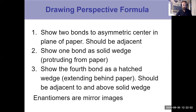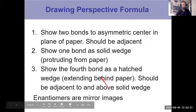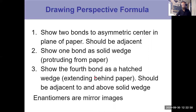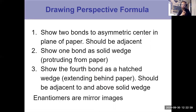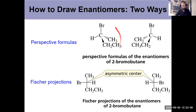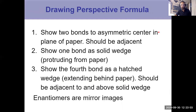For perspective formulas, the key rule is that the two bonds in the plane — the normal lines — have to be adjacent to one another. Then you fill in the solid wedge coming out, and the hashed or dashed wedge going back, which should be next to and above the solid wedge. The wedges are next to one another with the dashed going above, and the normal lines are next to one another. To draw the enantiomer, you consider a mirror and draw the mirror image of everything — that's how you get the other enantiomer.